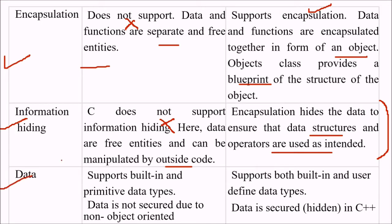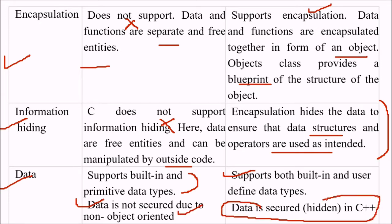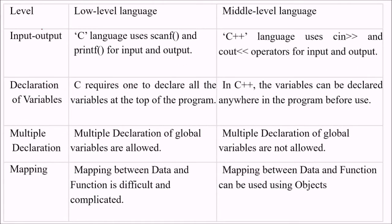Regarding data, C supports built-in and primitive data types, while C++ also supports built-in and user-defined data types. In C, the data is not secure due to its non-object-oriented nature, while in C++ data is hidden and secured. In terms of level, C is a low-level language while C++ is a mid-level language.